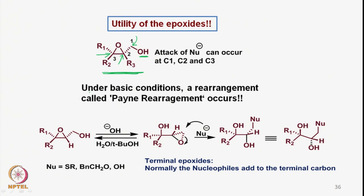One very important thing is that under basic conditions, these epoxy alcohols undergo a rearrangement called the Payne rearrangement. If we take an epoxy alcohol of this type and react it with a base such as sodium hydroxide or potassium hydroxide, we can anticipate that this epoxy alcohol becomes a particular anion by the base that we have used.